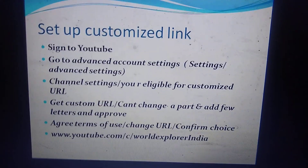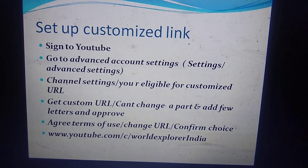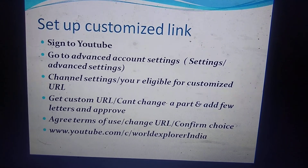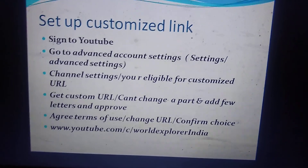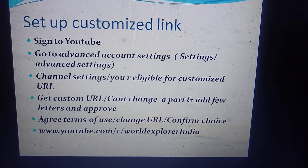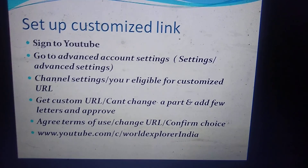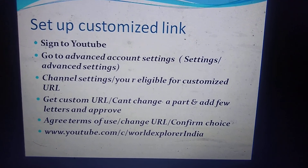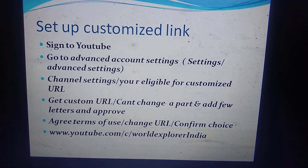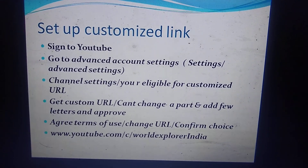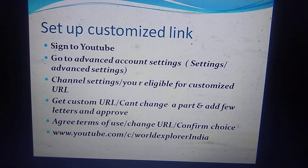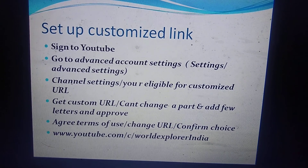Now, how to set up a customized link: sign into YouTube, go to Settings, then Advanced Account Settings. In the settings, go to Advanced Settings, then Channel Settings. Once you are eligible, you will see a message saying you are eligible for a customized URL. Click 'Get Custom URL.' YouTube will not allow you to change the full name — it will fix your previous channel name, and you have to add a few letters. Then agree to the terms and conditions and confirm the choice. The customized link of my YouTube channel is youtube.com/c/WorldExplorerIndia.